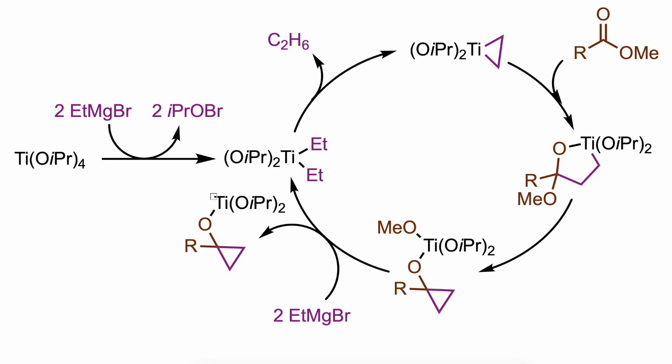The resulting titanium cyclopropoxide undergoes alkylation at the titanium by a second equivalent of ethyl magnesium bromide, and thus the diethyl titanium intermediate is regenerated and the product magnesium cyclopropoxide is formed.